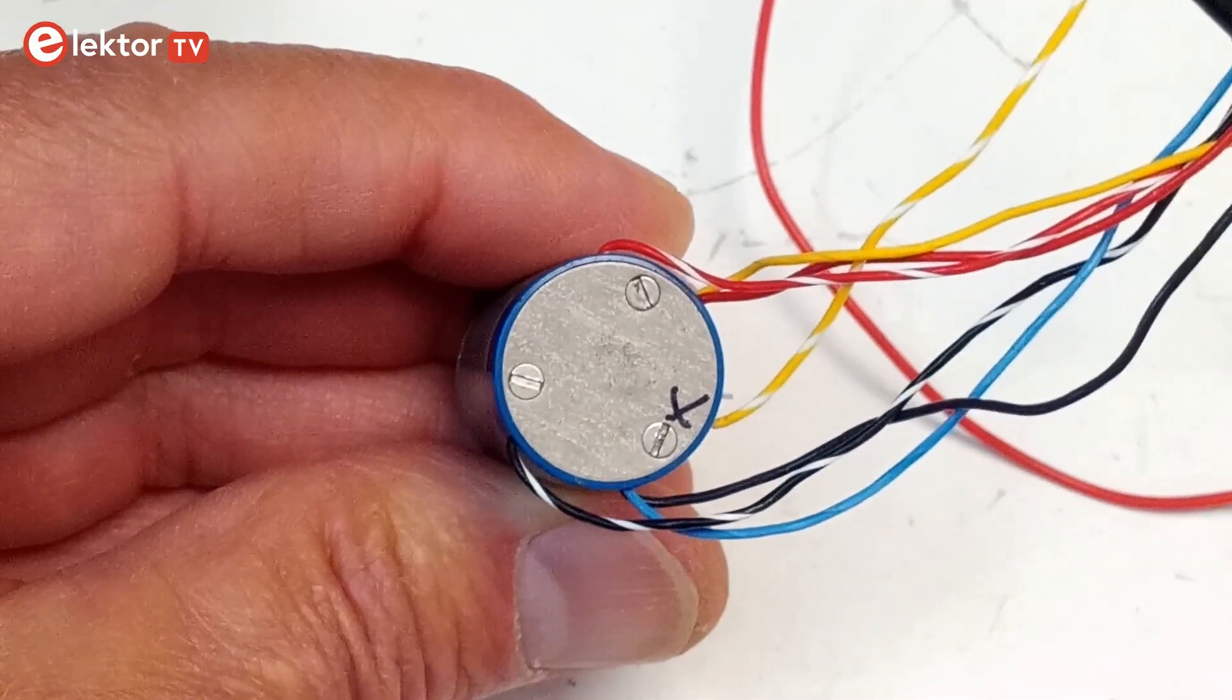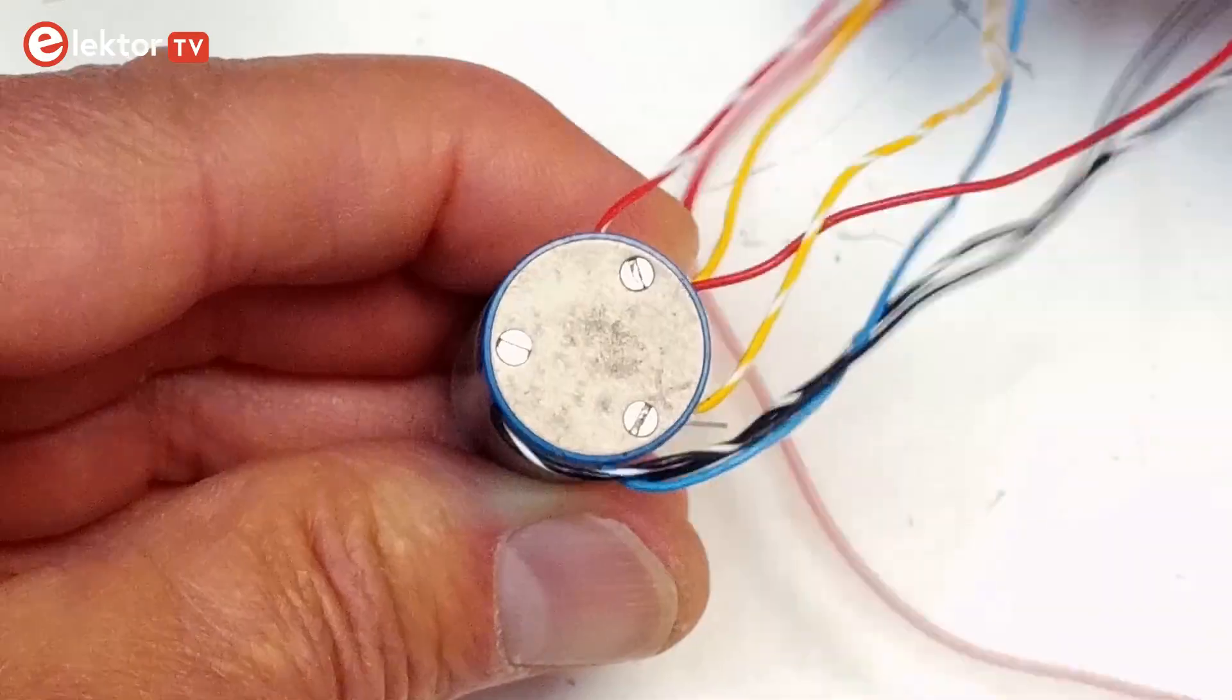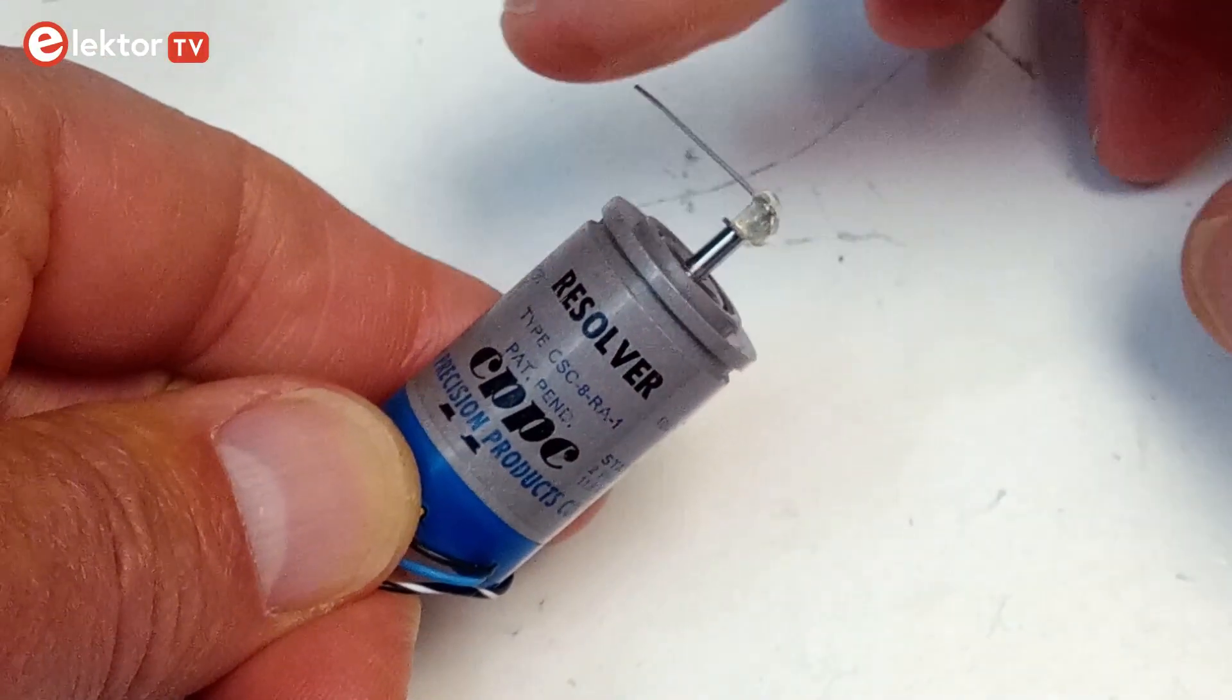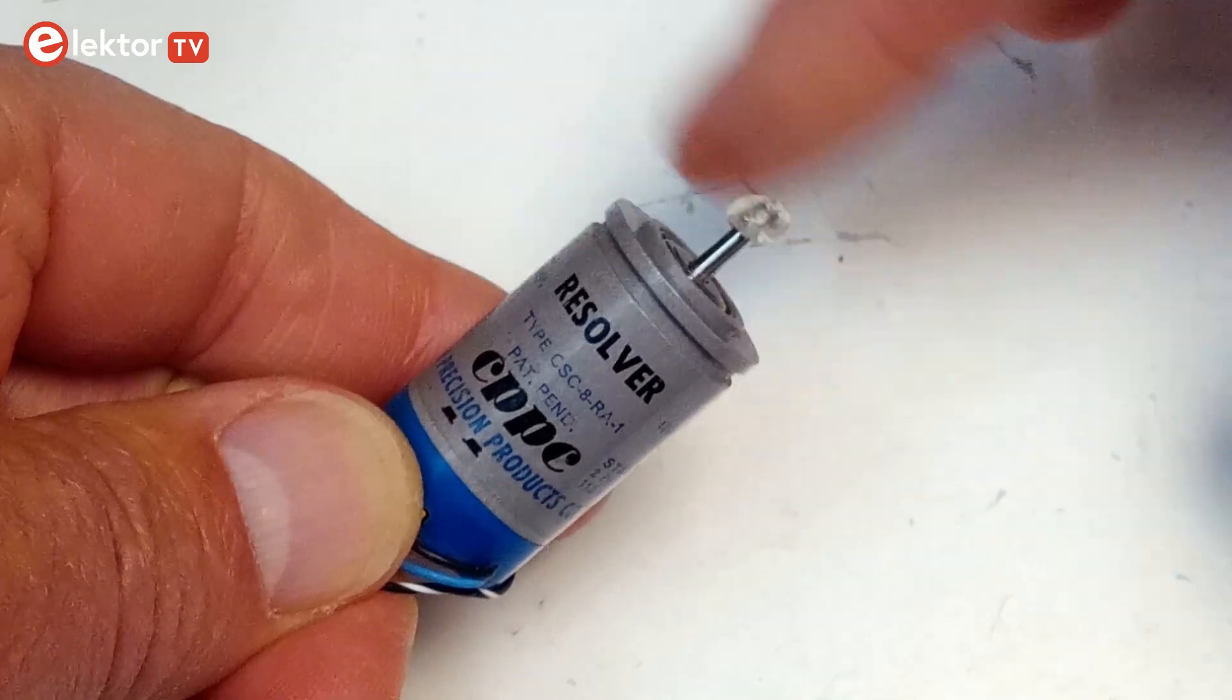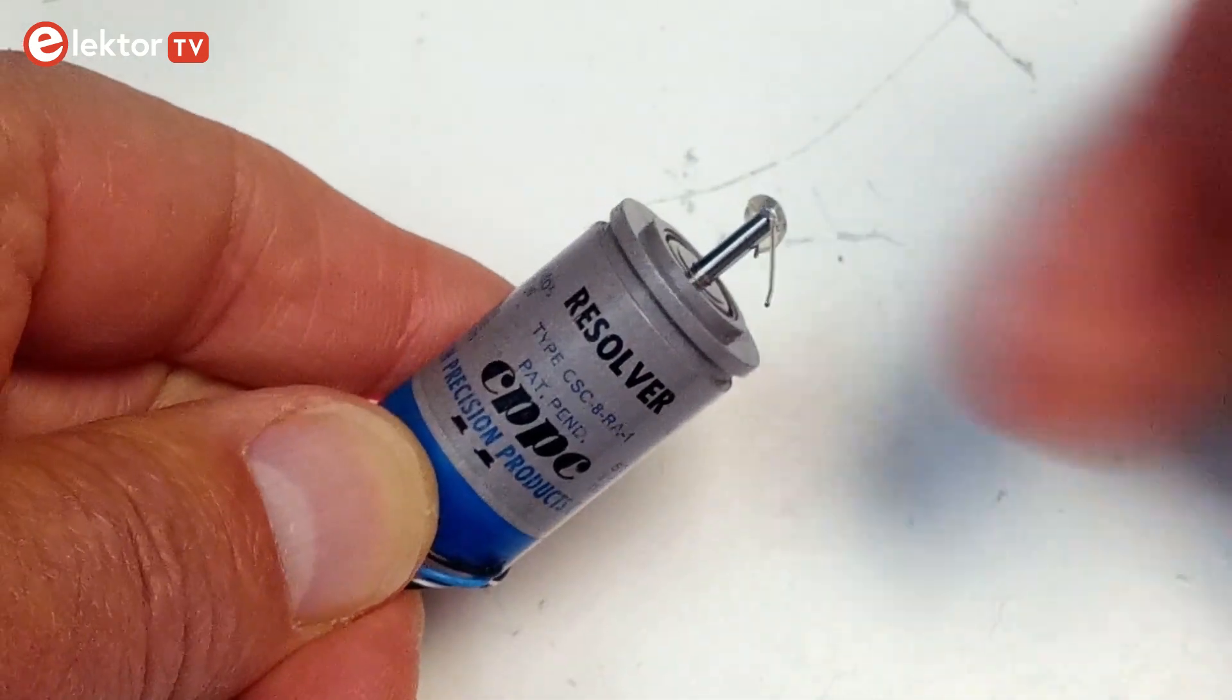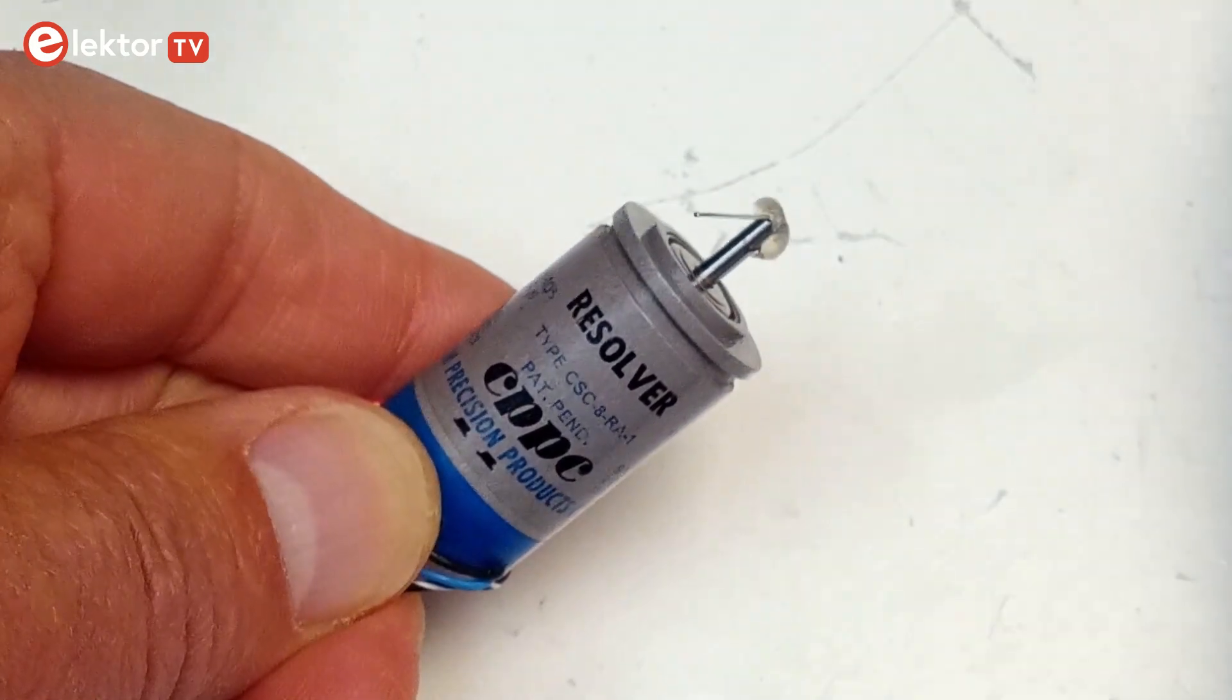It looks like an electric motor with seven wires and it has a resolver printed on it. It was given to me more than 40 years ago. At the time I was just starting in electronics and for me electric motors needed only two wires, not seven, and so I had no clue what to do with it.